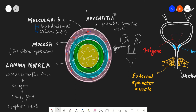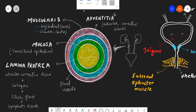The adventitia is the outer superficial covering made up of areolar connective tissue, and in this layer you can find blood vessels which supply blood to the ureter. Goblet cells present inside the mucosa produce mucus, which provides protection from urinary concentrations. The areolar connective tissue of the lamina propria binds the transitional epithelium mucosa to the muscularis layer.